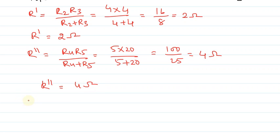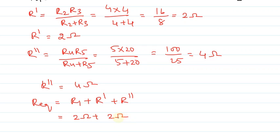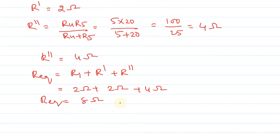Now let us find out the equivalent resistance across all three resistors. R equivalent is equals to R1 plus R prime plus R double prime, that is 2 ohms plus 2 ohms plus 4 ohms, this is equals to 8 ohms. So 8 ohms is the equivalent resistance across the resistors.